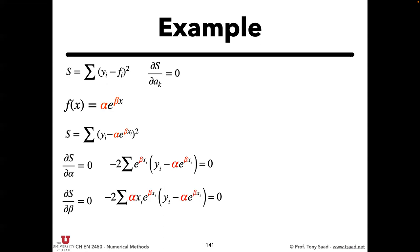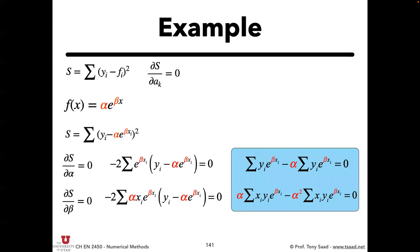We now have two equations and two unknowns — α and β — so the system is closed and well-posed. But those equations are non-linear; you cannot write them in matrix form. That's where we stop here. We don't yet know how to solve non-linear systems — that's coming in a few weeks. But you should know how to derive these governing equations.